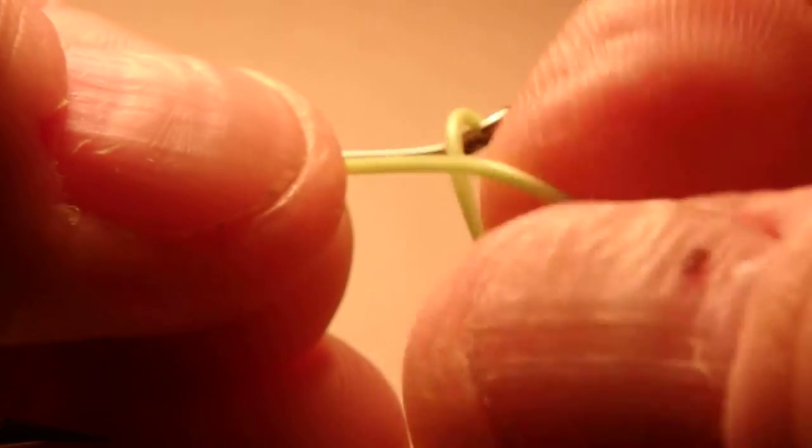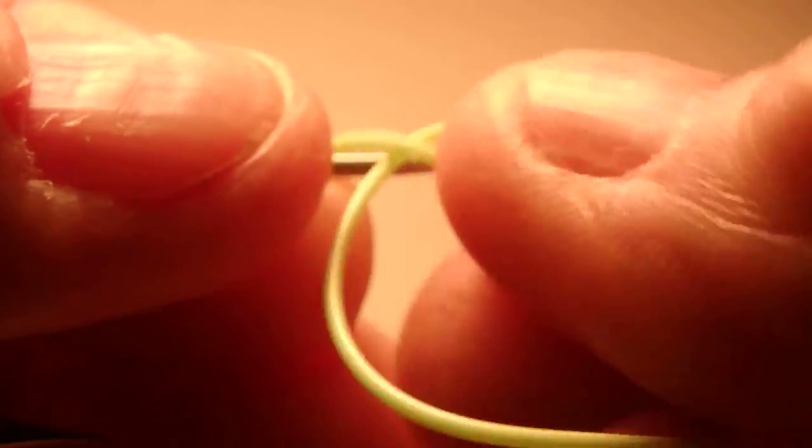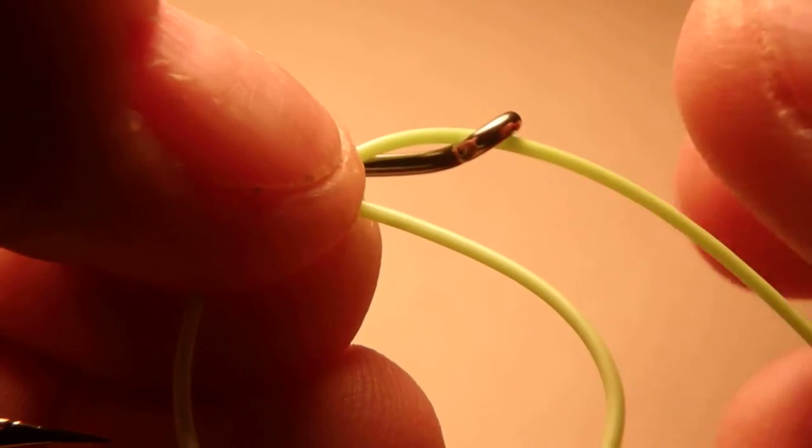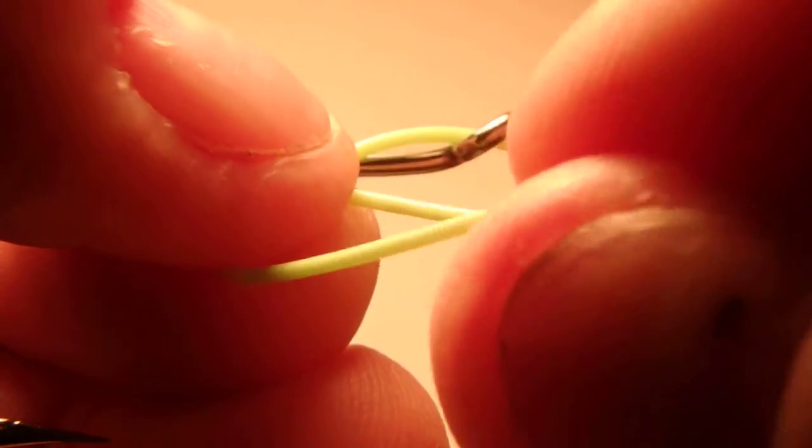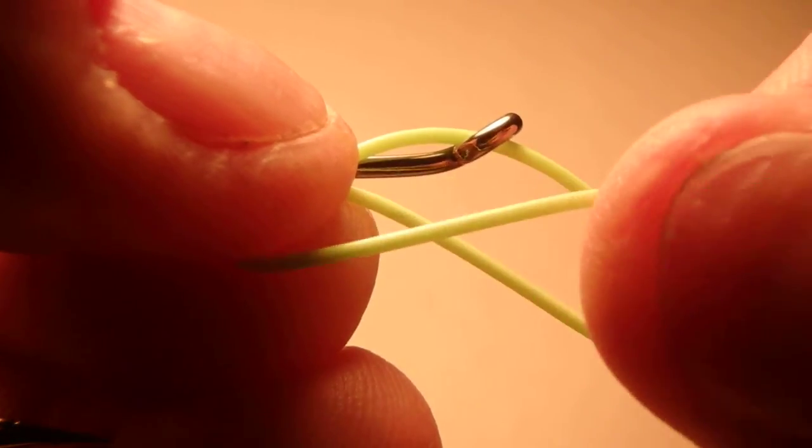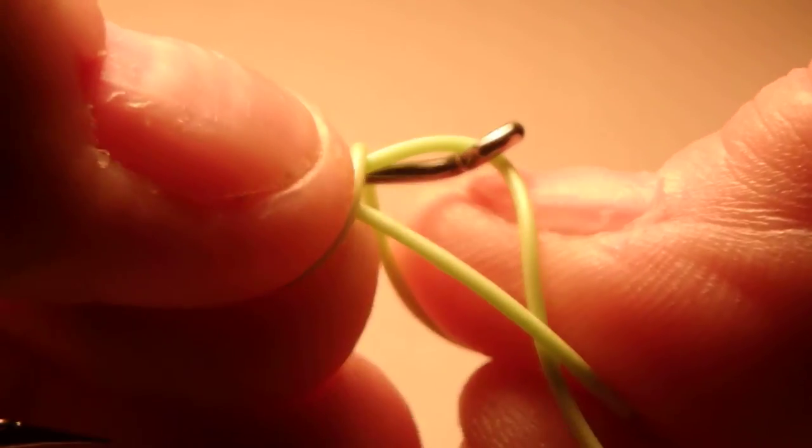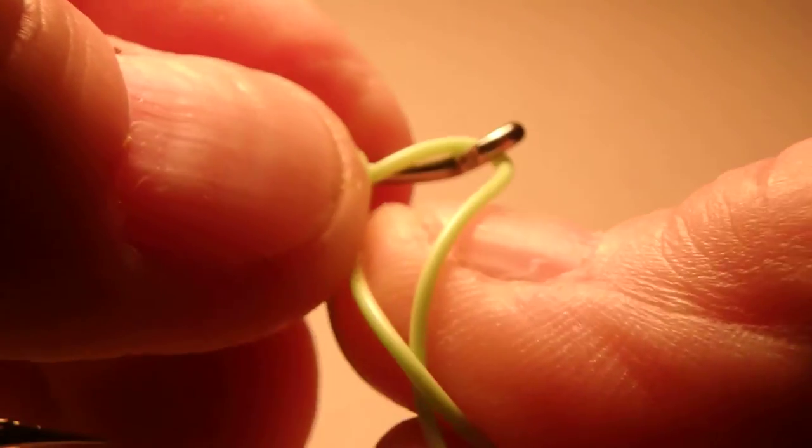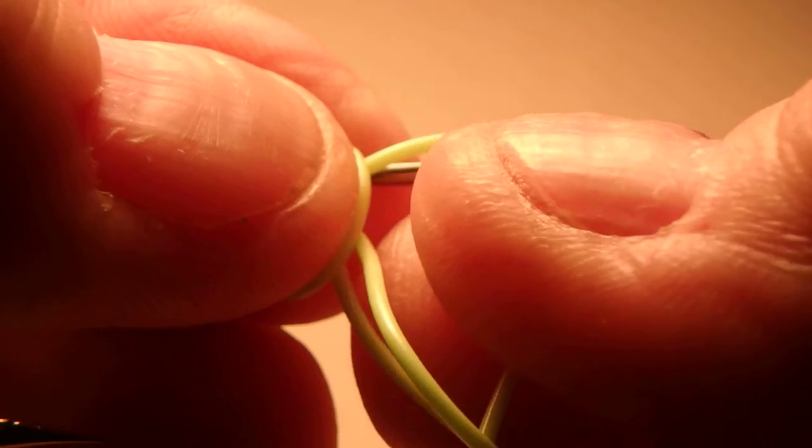Push another couple of inches through and make a loop like so. Pinch it under the shank of the hook tightly. Take the loop and roll it over the eye and the shank and hold it down with your finger.